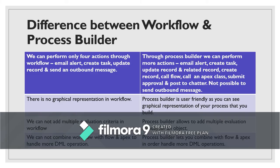What is the difference between workflow and Process Builder? In workflow, we can perform only four actions: email alert, create task, update a record, and send an outbound message. Through Process Builder we can perform more actions — email alert, create task, update a record and its related records, create a new record, call a flow, call an Apex class, submit for approval, and post to Chatter — but we cannot send an outbound message through Process Builder.